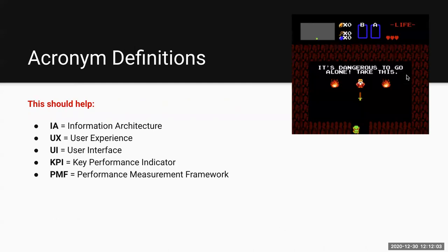A few acronyms before we get started: Information Architecture — IA. User Experience — UX. User Interface — UI. Key Performance Indicator — KPI. Performance Measurement Framework — PMF.